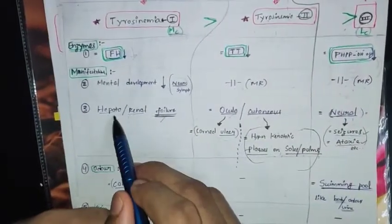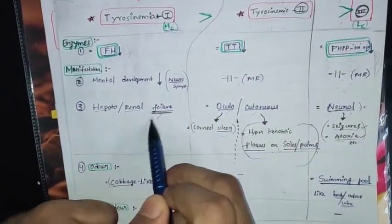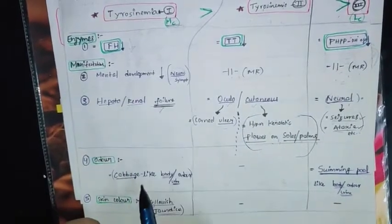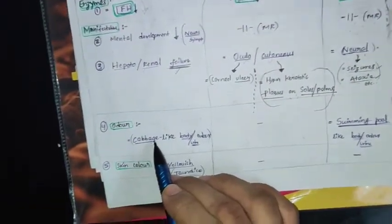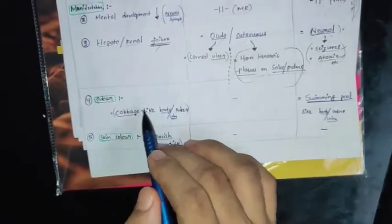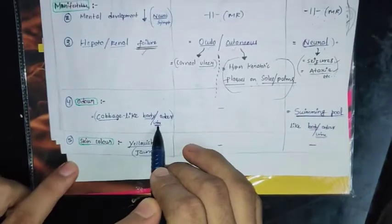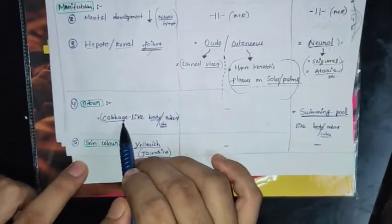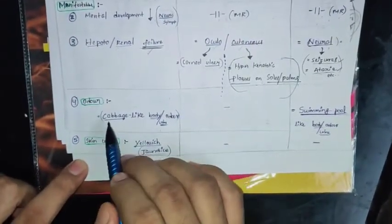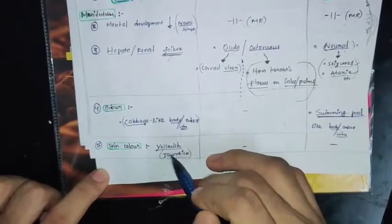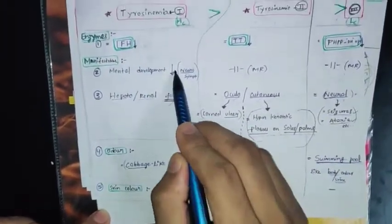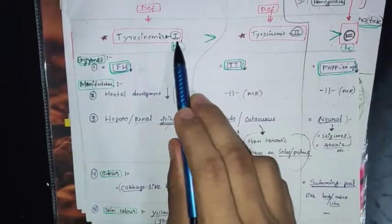For Tyrosinemia type 1: when a patient comes with hepatorenal failure (kidney and liver failure), along with mental retardation and a boiled cabbage-like body odor — remember 'cabbage-like odor' for type 1. Also, the skin color is yellowish (jaundice). So color changes, cabbage-like order, hepatorenal failure, and neural symptoms together suggest Tyrosinemia type 1.